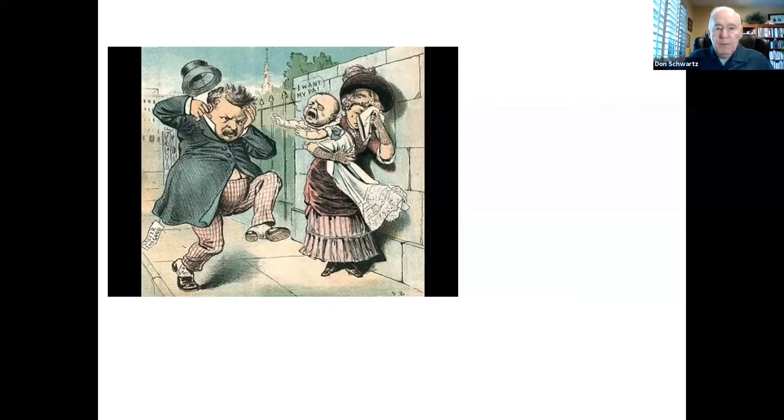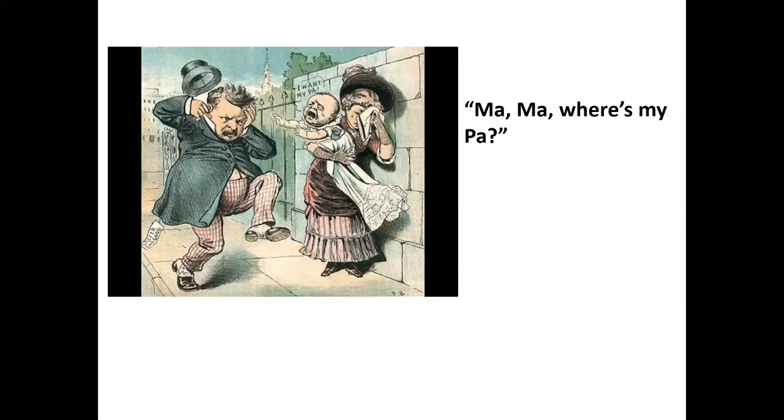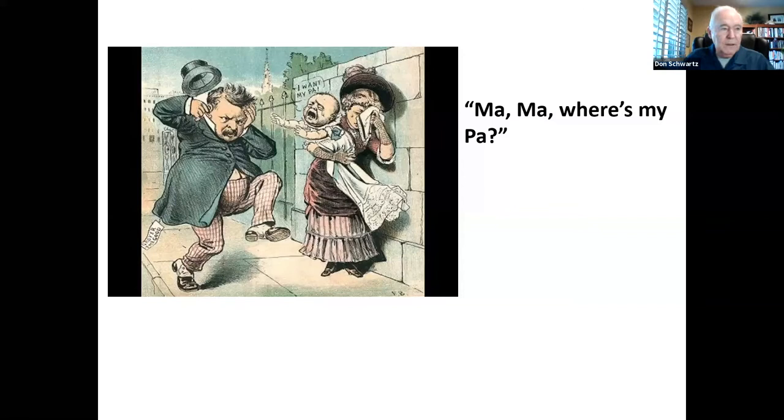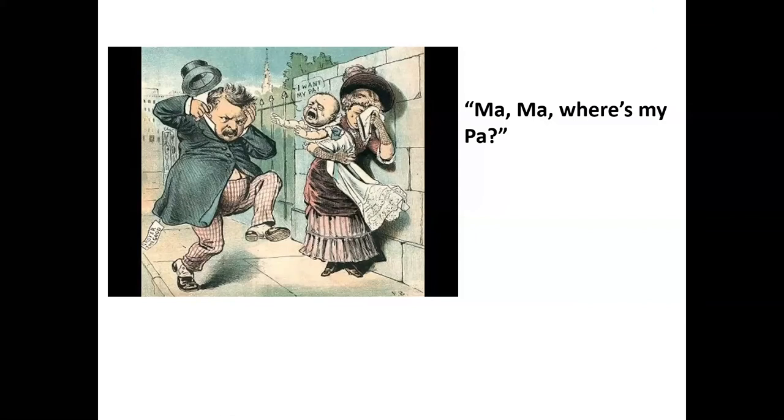Maria Halpin claimed that Cleveland was the father, and Cleveland did what no sane politician had ever done before — he admitted his paternity and agreed to pay Maria child support. When this issue was brought forth in the campaign, Republicans began the chant: 'Ma, Ma, where's my pa?' The 1884 election, perhaps because of this scandal, was closer than many people expected. Cleveland won the popular vote by a very narrow margin — less than half a percent — but won the electoral vote by a wide margin. Blaine lost the state of New York by less than a thousand votes.